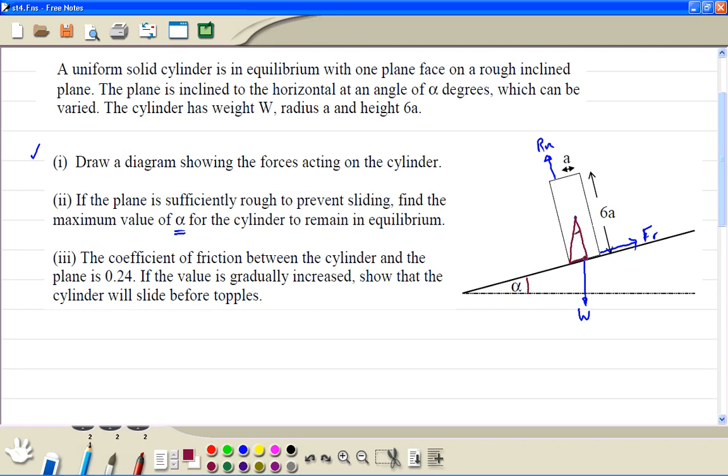Then this is the opposite, which is the radius, which is equal to a. Then the height, half of 6a is 3a. Therefore, alpha is just inverse tan, a divided by 3a is just one third.